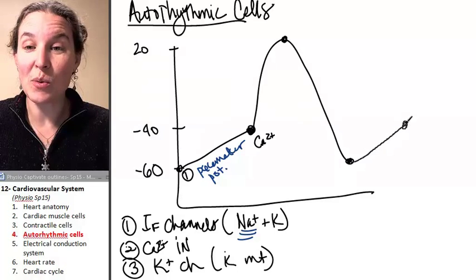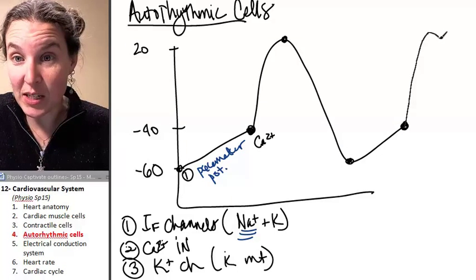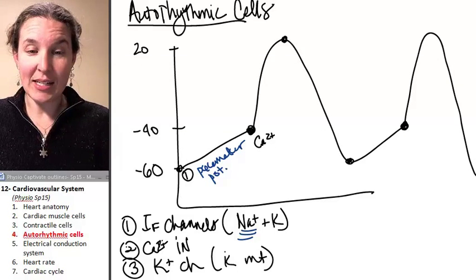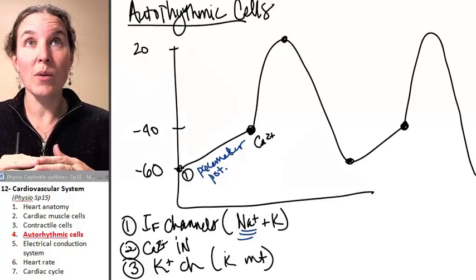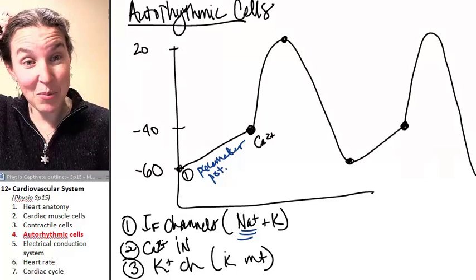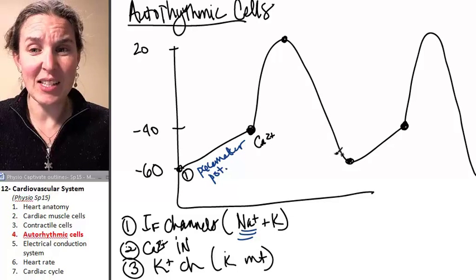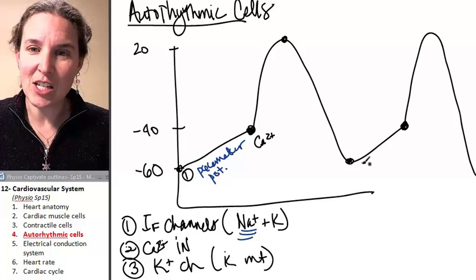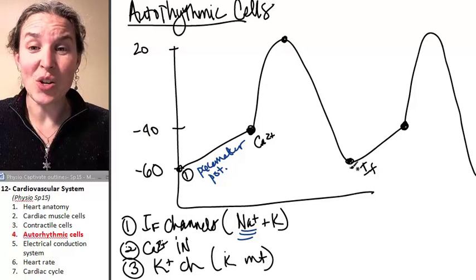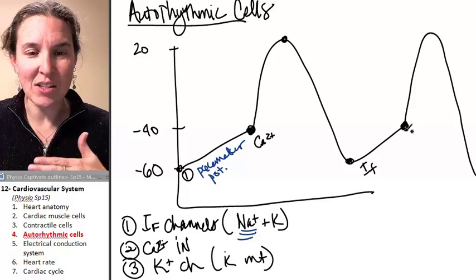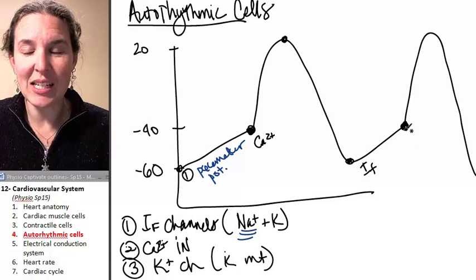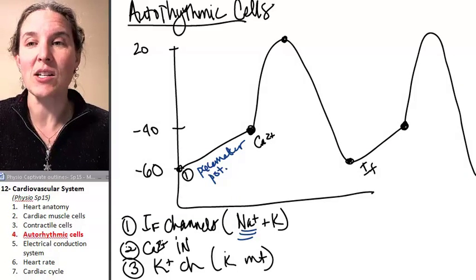As soon as we reach threshold, we generate an action potential. And then we head back down to where you start at negative 60. It isn't the resting membrane potential. It's just the starting point. And then my funny channels are leaky. And so we can't hang out at a certain place. Eventually we reach threshold because of those leaky channels and we fire an action potential.